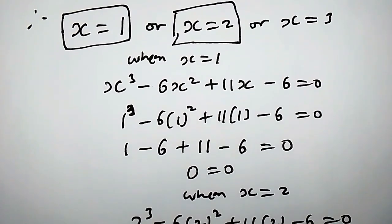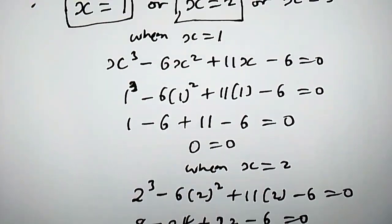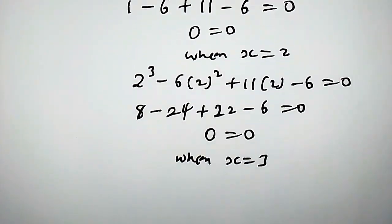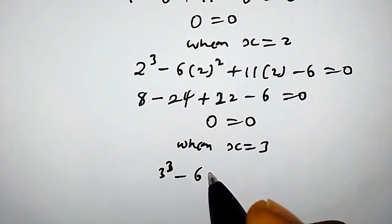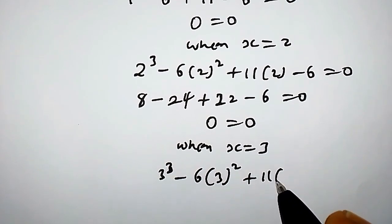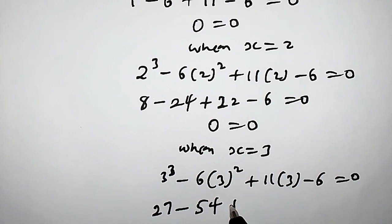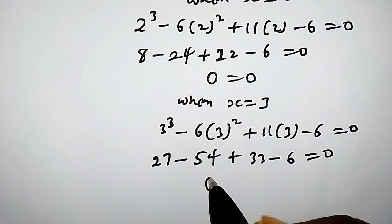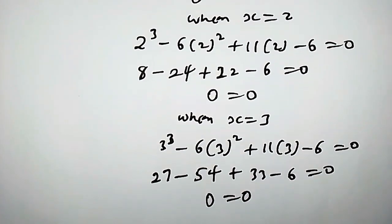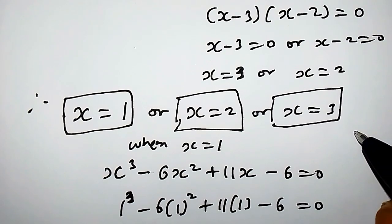Now let's check x equals 3. Plugging into the cubic: 3 cubed minus 6 times 3 squared plus 11 times 3 minus 6 equals 0. That is 27 minus 54 plus 33 minus 6, which equals 0. So x equals 3 is indeed our third solution. See you in the next video!